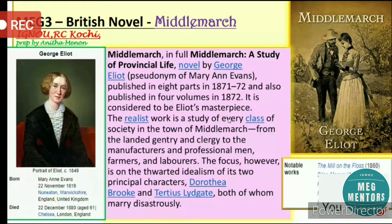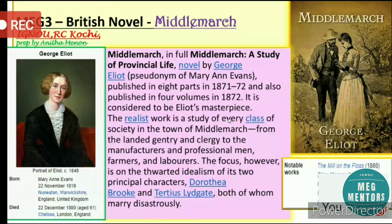The work can be called a realistic novel — a realist study of every class of society in the town of Middlemarch. She invented this town called Middlemarch, which people say is based on a place in England called Coventry. It's called a realistic novel because we get to see characters from every section of society: from the landed gentry, the clergy, manufacturers, professional members, farmers, and laborers — a true cross-section of society.